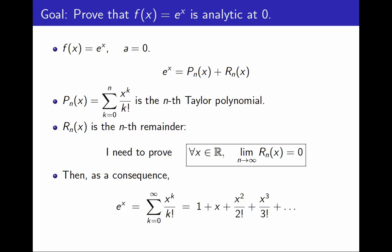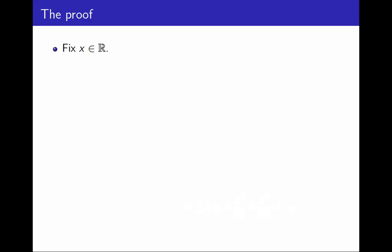Let's write down the proof. First, I'm going to fix a real number x. And now for this value of x, I have to prove the remainders go to 0. And my tool is going to be Lagrange's remainder theorem. I'm going to use it for the exponential function at 0. I explained this theorem in the previous video. I will add a link in the description. But that is the tool we always use to prove a function is analytic this way.